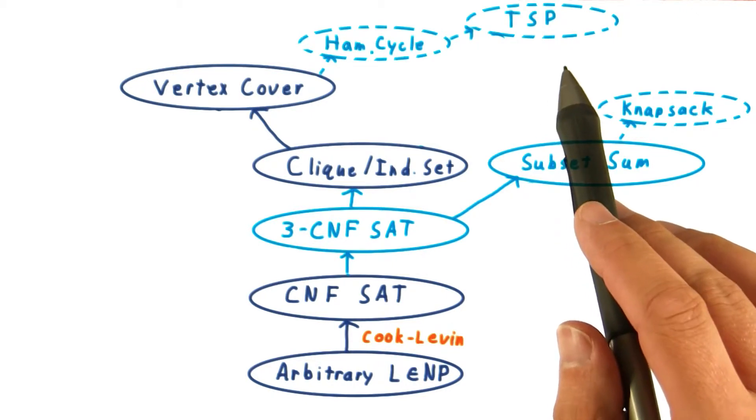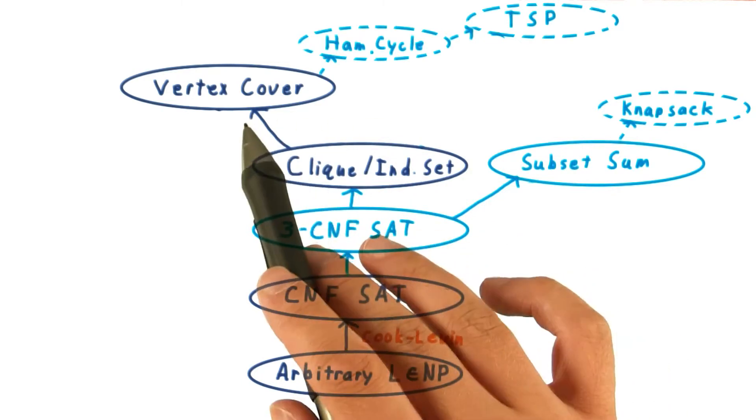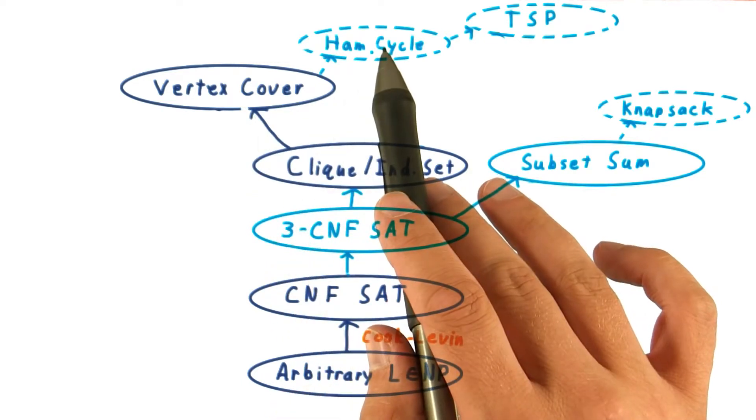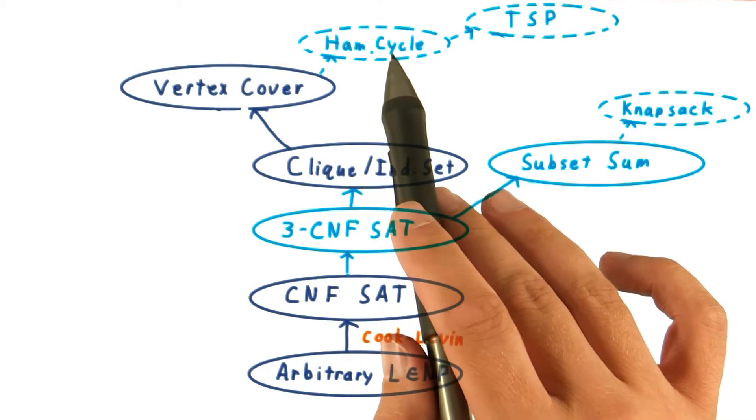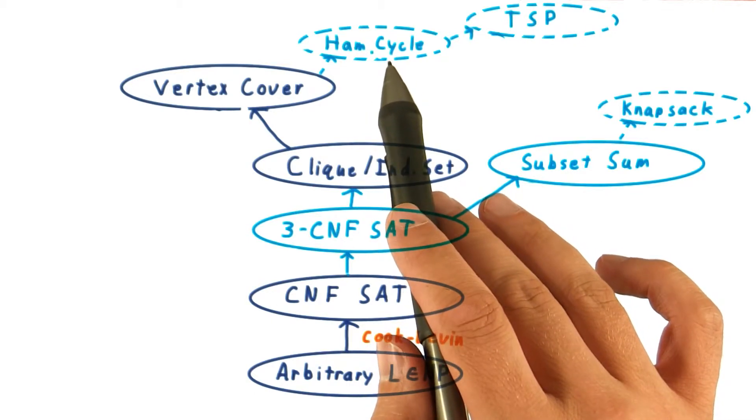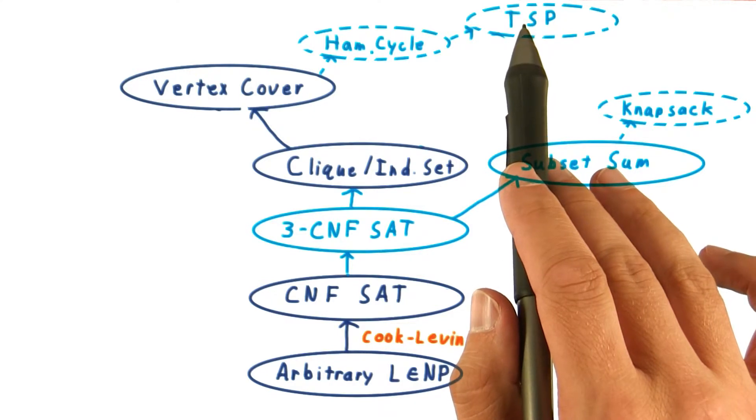One can prove that this problem is NP-complete by first reducing vertex cover to the Hamiltonian cycle problem, which asks if there is a cycle in a graph that visits each vertex exactly once, and then Hamiltonian cycle to traveling salesman.